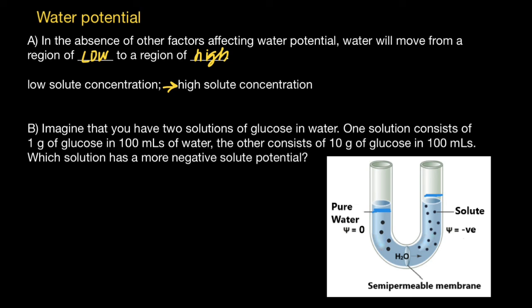And our answer to the question, which solution has more negative solute potential, would be solution with 10 grams of glucose in 100 milliliters. And this is all for today. Subscribe and see you in the next video. Goodbye.